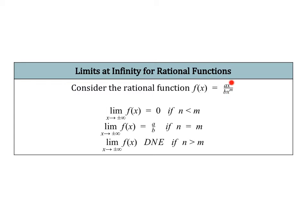If the degrees are equal, it's essentially like they're canceling each other out, and what you have left is the ratio of their coefficients, a over b — that's where the limit will be. And if the degree on top is larger than the degree on the bottom, the values for your function are just going to keep getting larger and larger, and therefore a limit does not exist.